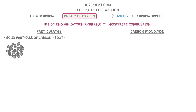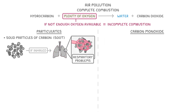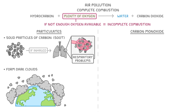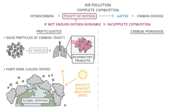If we start with particulates, there are two main problems to be aware of. The first is that if they're inhaled, they can get stuck in your lungs and damage them, which can lead to respiratory problems. The second issue is that they can form dark clouds or smog, which reflects sunlight back into space, meaning that less light reaches the earth — which we call global dimming.